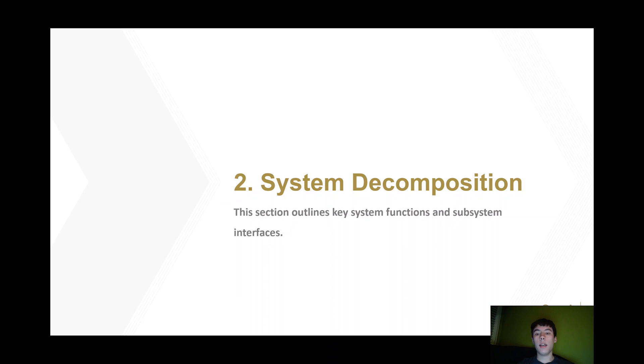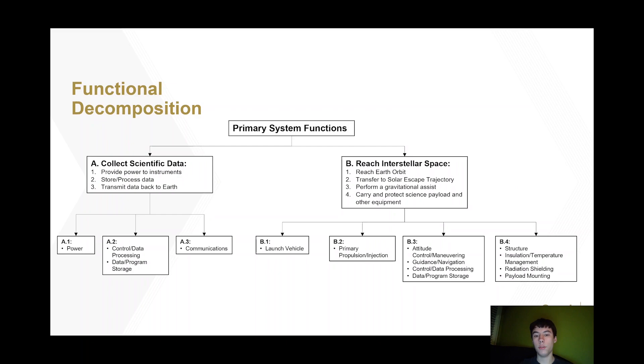This is our system decomposition section, where we determine what subsystems our spacecraft would need to have. The first step was to decompose the spacecraft into its different functions. These came in two main categories. First, it must collect scientific data, which involves providing power to its instruments, storing and processing the data, and sending it back to Earth.